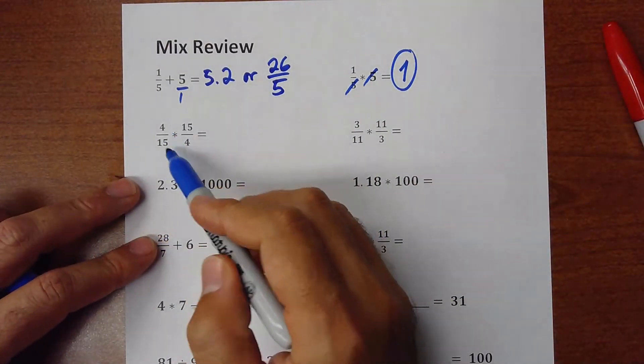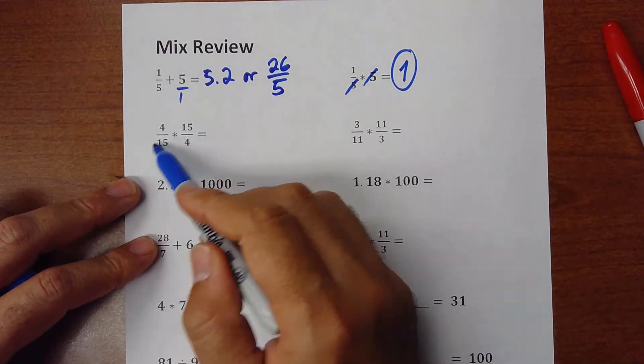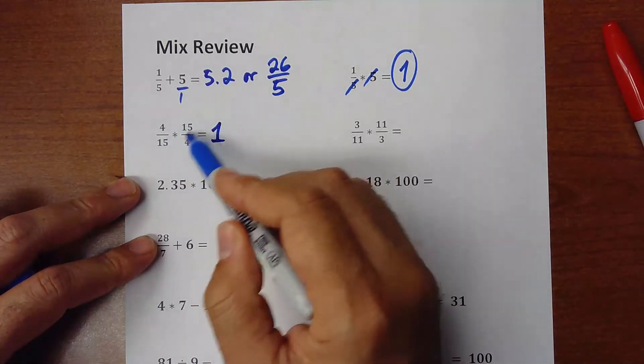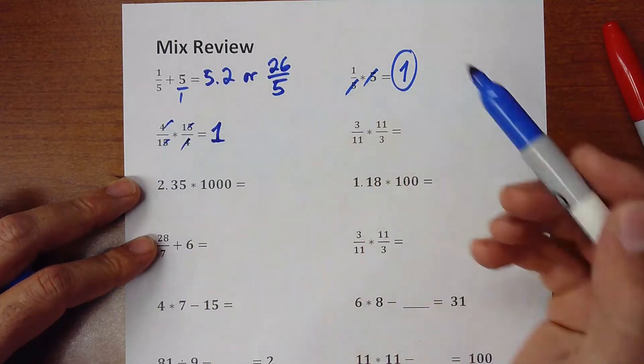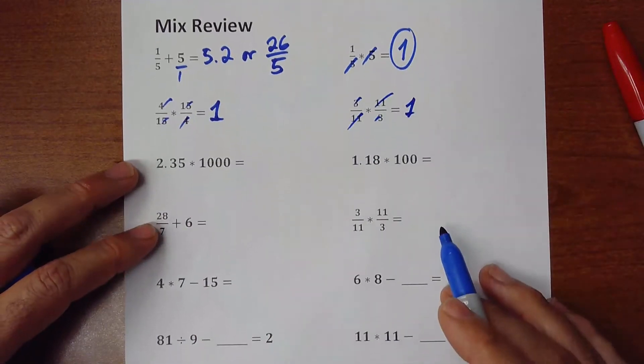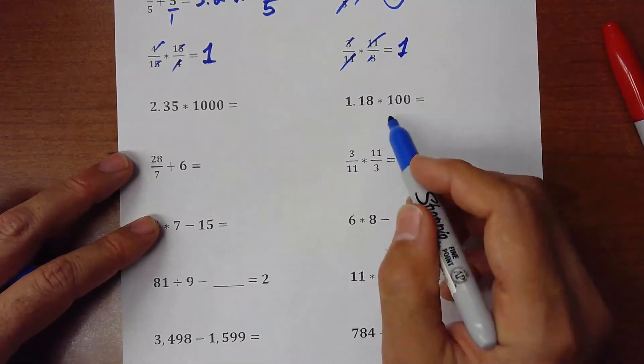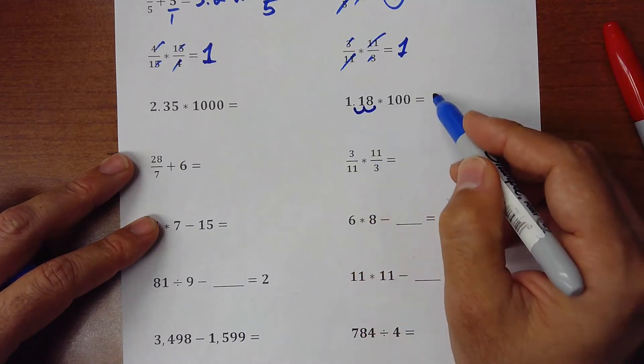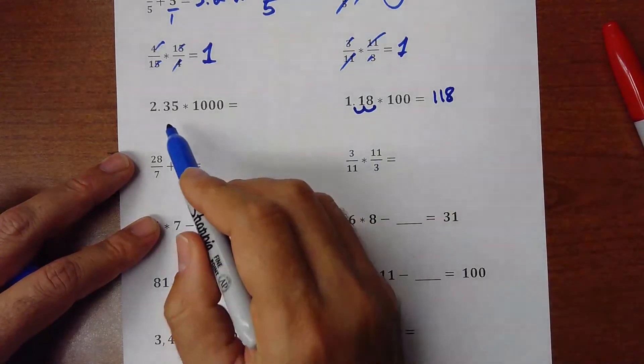So this is inverse multiplicative property. So that would be equal to 1. Simplify this with this, this with this, that would be 1. This is the same thing. You simplify all this, that would be 1. So here I have multiplication by 100. When it's a decimal, just move two spaces here. 118. That's it.